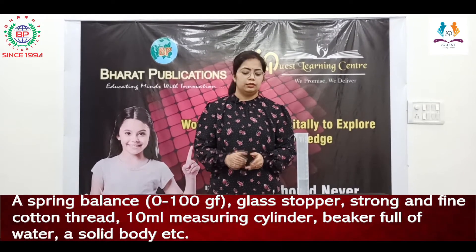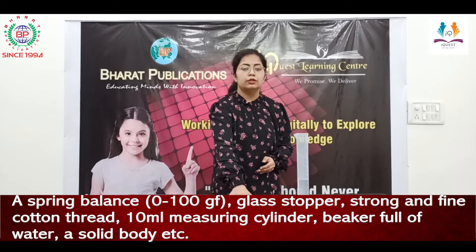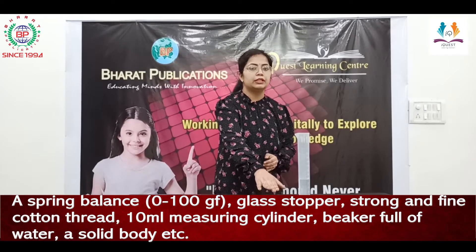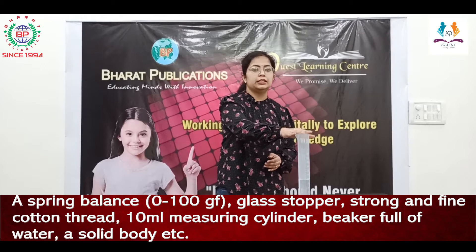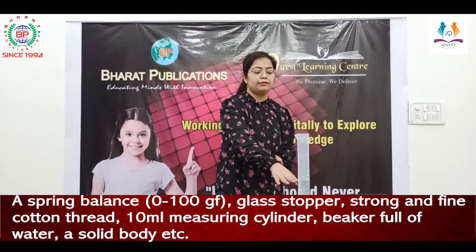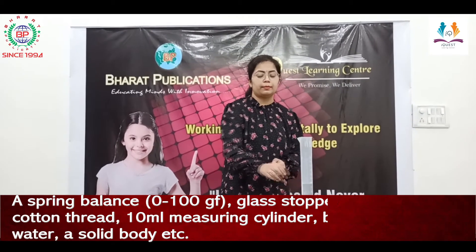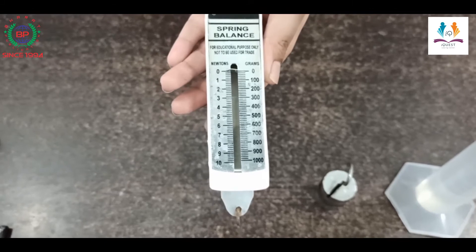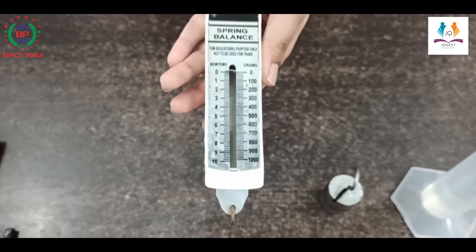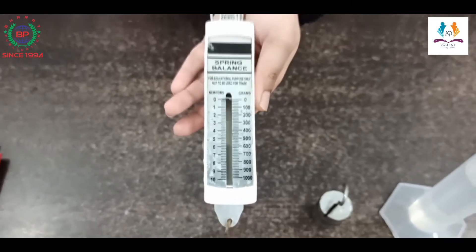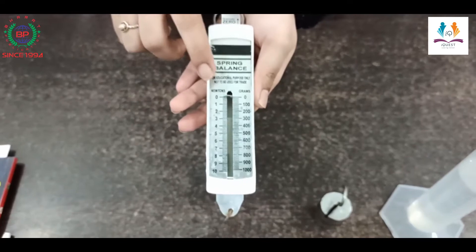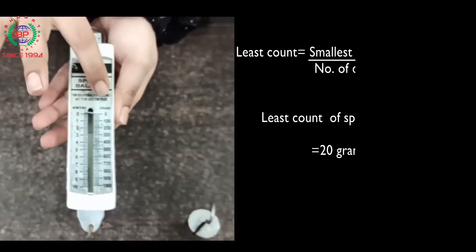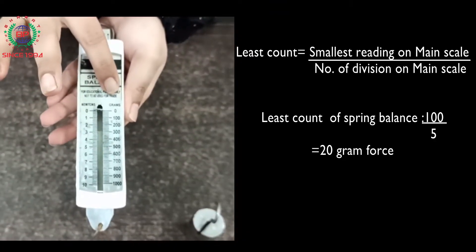The materials required to do this activity are: a spring balance, one solid body, and a measuring cylinder having some water in it. The spring balance we are using can measure weight in two units — one is in newtons and the second is in gram force.